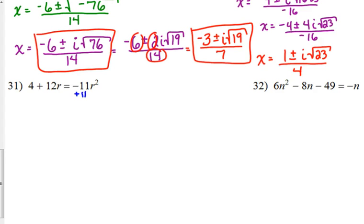One term in that case, so we have 11r squared plus 12r plus 4 is equal to 0. So that means a is 11, b is 12, c is 4. All of them are positive.